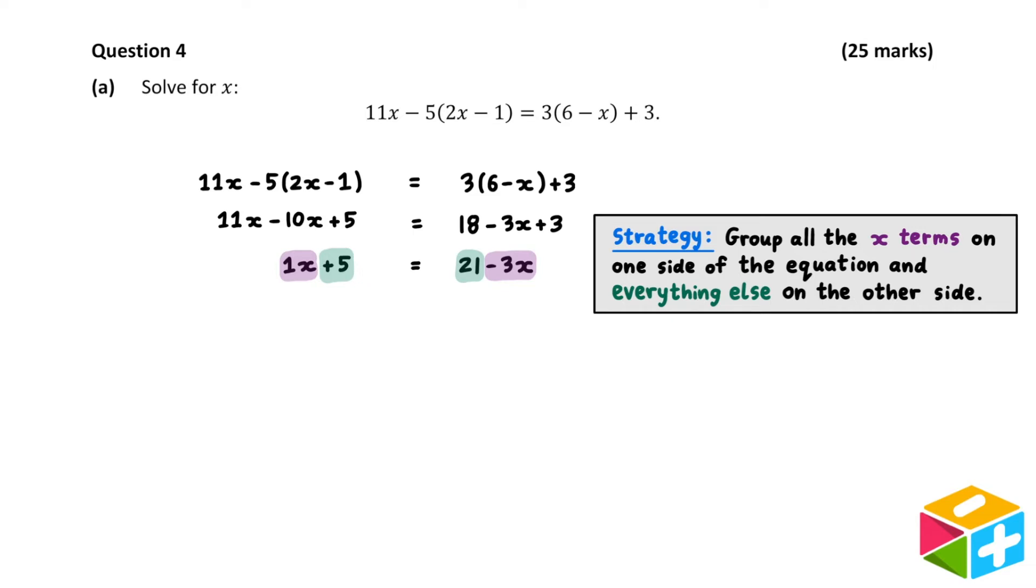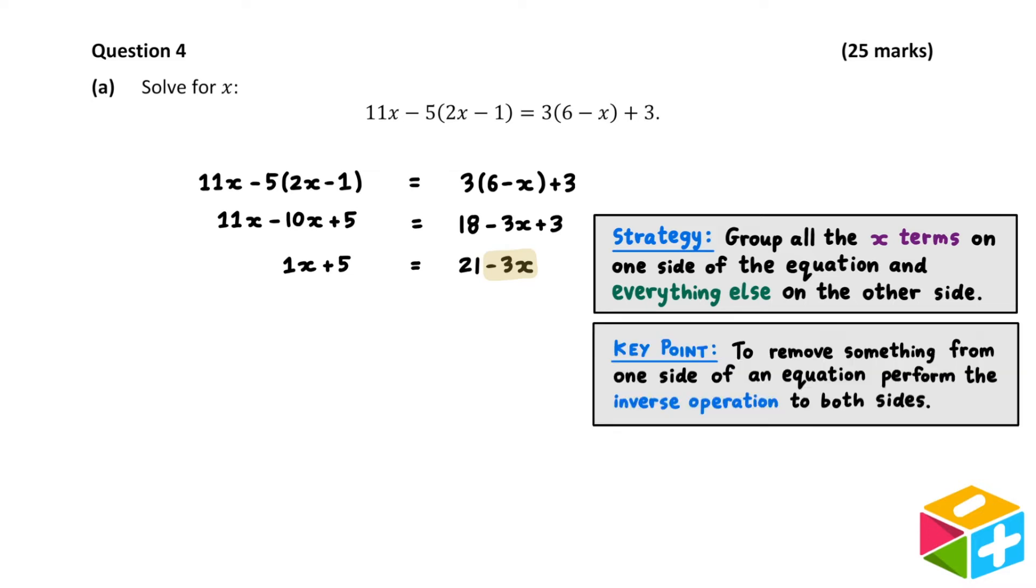Here, I'm going to group my x terms on the left and everything else on the right. To start, I'll need to remove the minus 3x from the right-hand side. The key here is the following: To remove something from one side of the equation, perform the inverse operation to both sides. The inverse of subtraction is addition, so to remove a minus 3x, I need to add 3x to both sides.